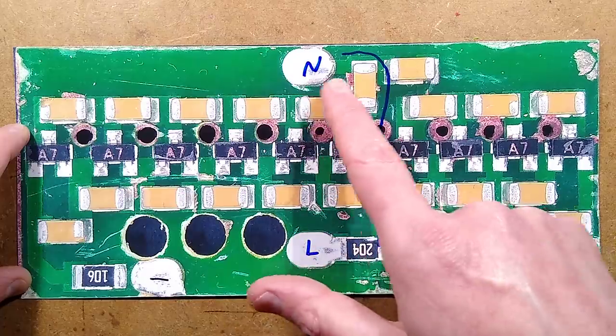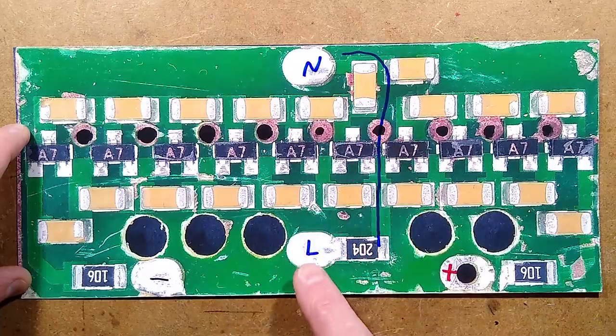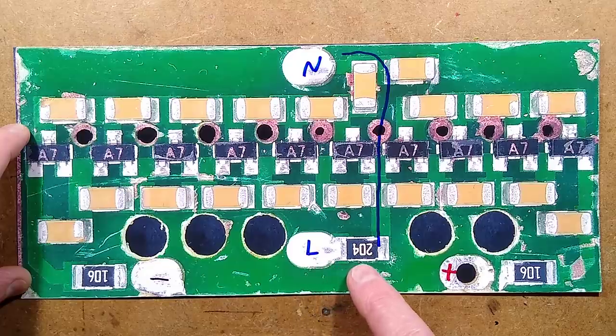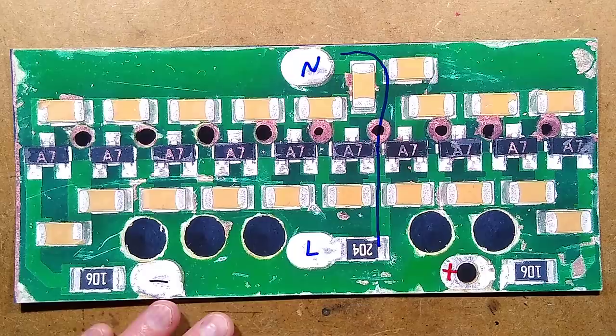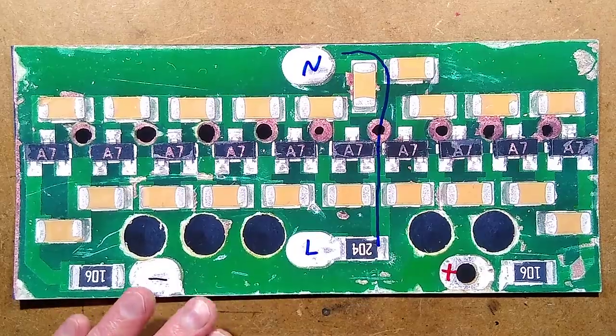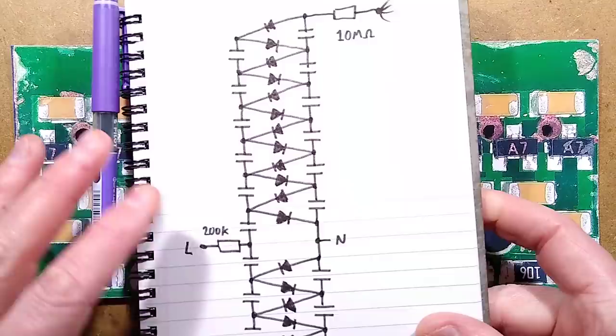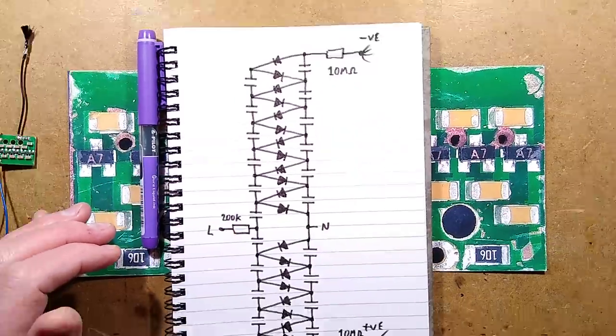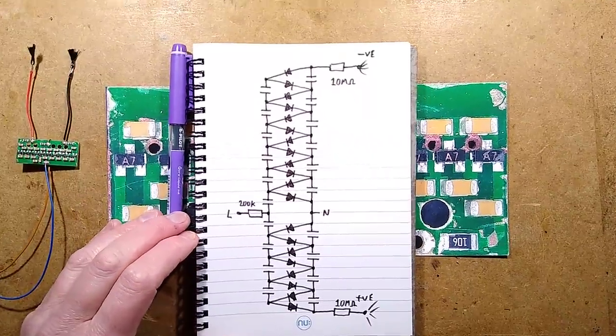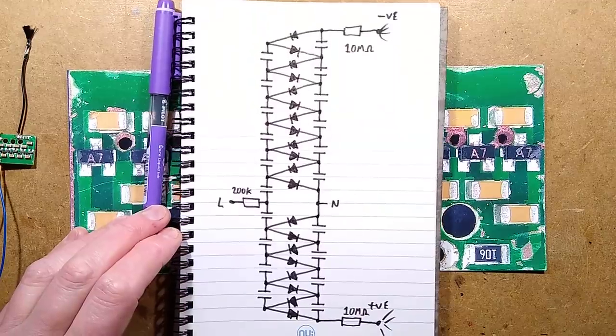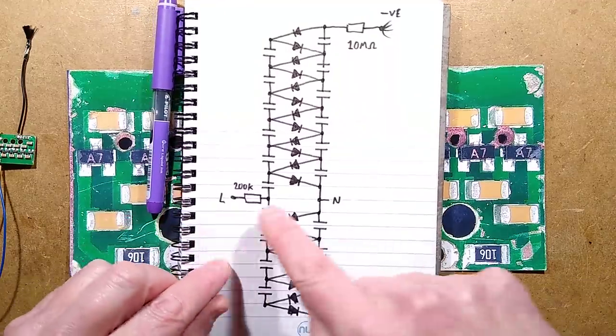The live and neutral, the neutral is connected straight to the end of simple capacitors. The live is going via a 200k resistor. And I've doodled the schematic down here. I shall show you it. I shall zoom out a bit. It's quite a tall schematic.